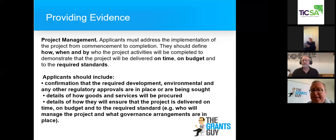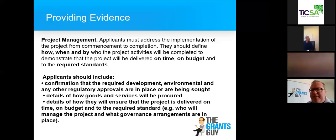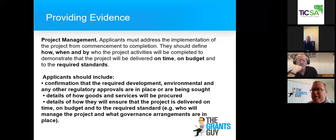Governance is huge — best practice, probity, transparency, all insurances up to speed, your licensing and tickets. Government at state and federal level like to call it TQM — total quality management — basically an ISO 9001 benchmark for your organisation. You need to provide details of how goods and services will be procured, how the project is delivered on time and on budget, and who will manage the project. Too often I see last-minute grant applications. You have a lot of time here — do your draft one, draft two, draft three. Something of this nature is not going to be written first time around.